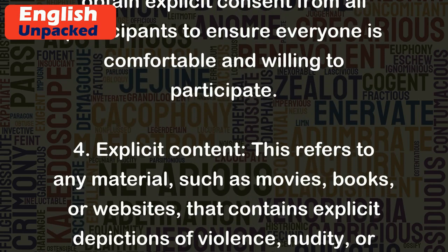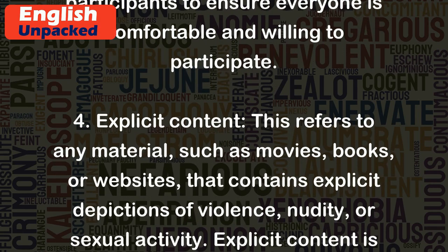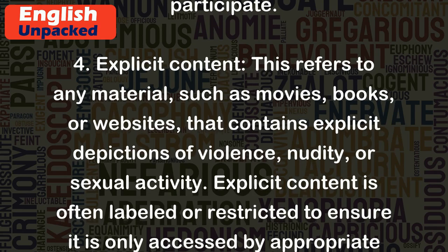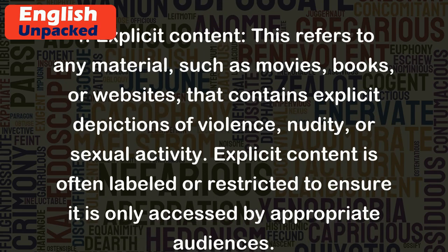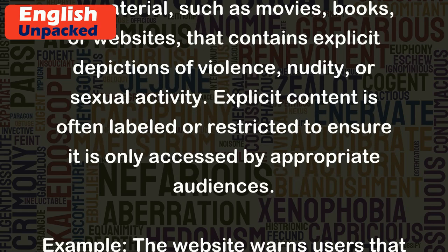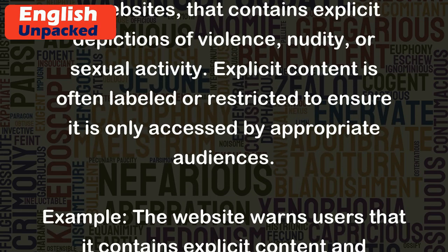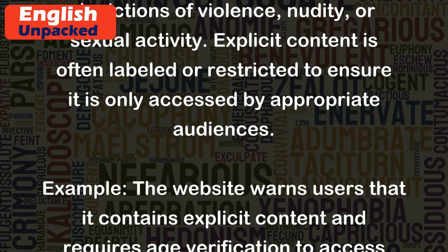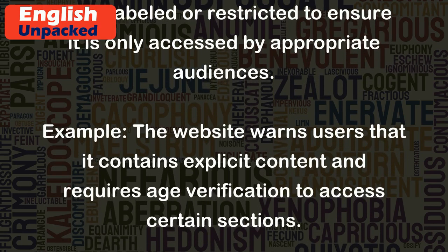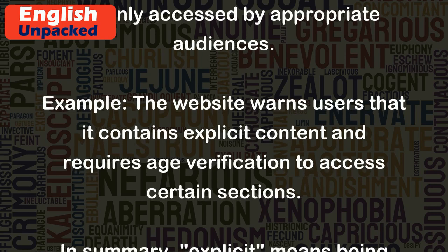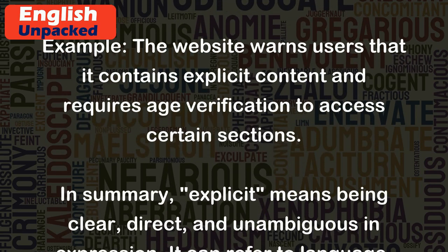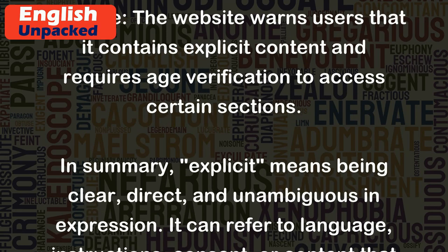4. EXPLICIT CONTENT — This refers to any material, such as movies, books, or websites, that contains explicit depictions of violence, nudity, or sexual activity. Explicit content is often labeled or restricted to ensure it is only accessed by appropriate audiences. Example: the website warns users that it contains explicit content and requires age verification to access certain sections.